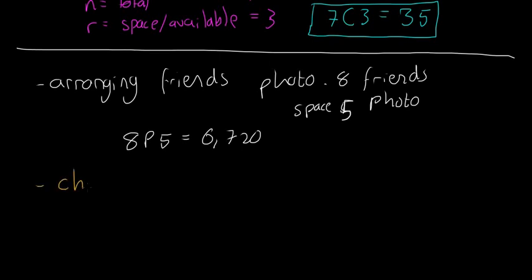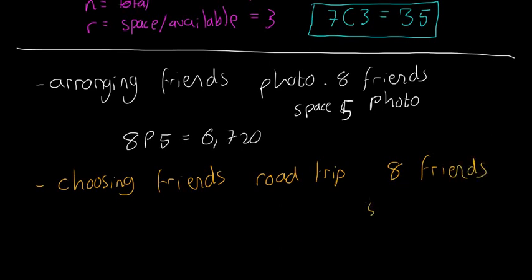In this case, say if we're choosing friends for a road trip in a five-seater car, it doesn't matter the order. It doesn't matter which friend is sitting in which seat as long as you have five of them. You have eight friends and five available seats, so you have to choose them. So it's 8C5, and if you stick that into your calculator, you're going to find that the answer is 56, which again is quite a good bit smaller than the 6,720.